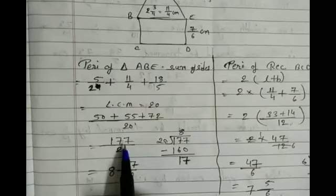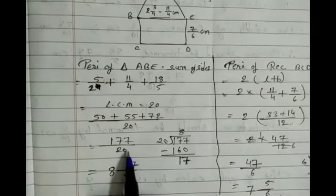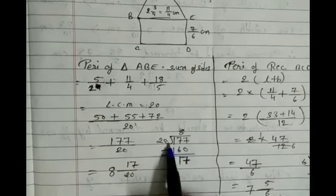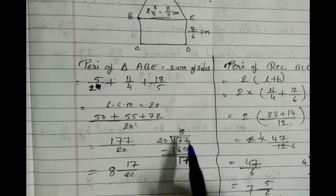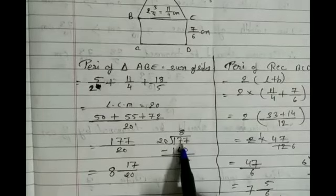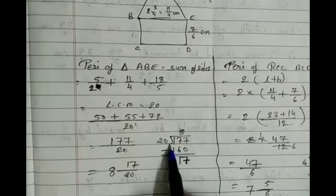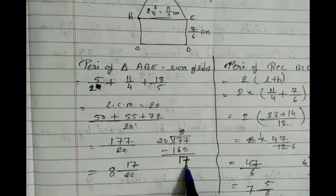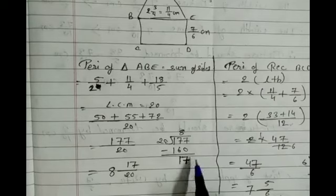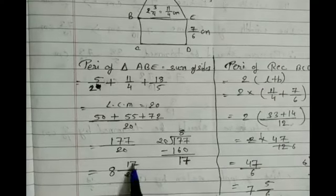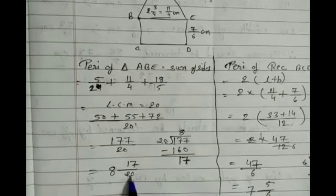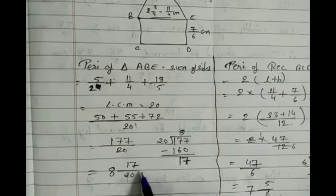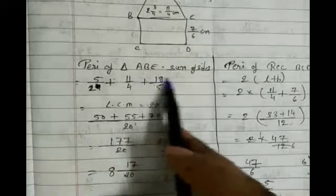We convert 177/20 to a mixed fraction by dividing 177 by 20. The quotient is 8 and the remainder is 17. So in mixed fraction form we write 8 and 17/20. This is the perimeter of the triangle.